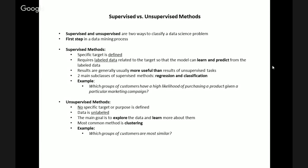Generally speaking, the results of supervised methods are considered more useful than unsupervised methods because the supervised methods have predictive capabilities. The two main subclasses of supervised methods are regressions and classifications. Regressions lead to numerical outputs, while classifications lead to categorical outputs.